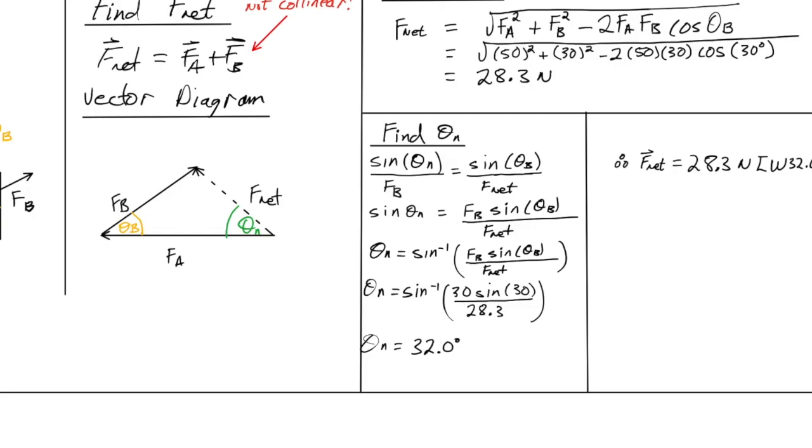But in this case, we are totally safe. And the reason why we're totally safe is because our theta N, which is the angle that we're looking for, is not opposite to the longest side. The magnitude of FB is 30, and the magnitude of FA is 50. The only side that has the potential to be obtuse is this angle right here.